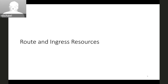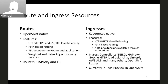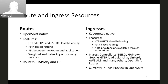Let's compare Ingress resources and routes. Routes are OpenShift native resources that appeared in OpenShift long before the Ingress resource appeared in Kubernetes. Routes offer several features such as HTTP and HTTPS load balancing, SSL-secured TCP load balancing, path-based routing, SSL termination between the router and backend applications, and weighted load balancing across many services.